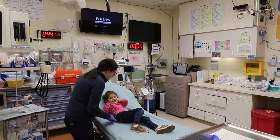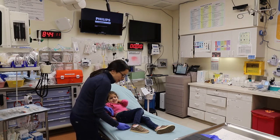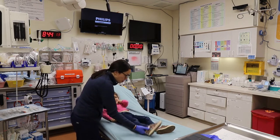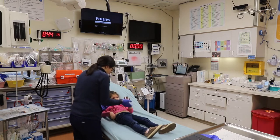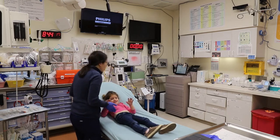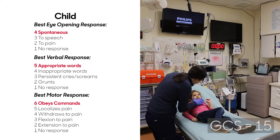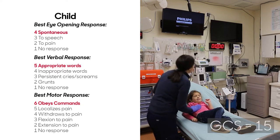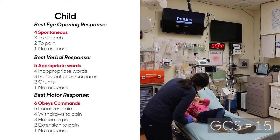Eyes are open spontaneously. Four. Patient is interactive and appropriate. Verbal is a five. Obeys commands. Motor is a six. The nurse documenting in the code room will add the scores together and will state the total. The documenting nurse will respond with the GCS is 15.